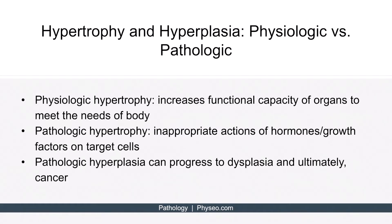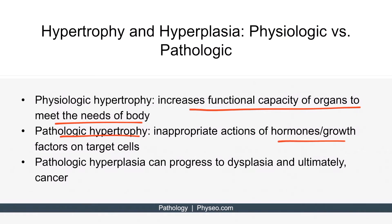Hypertrophy and hyperplasia can occur either in pathologic states or in physiologic conditions. Physiologic hypertrophy occurs to increase the functional capacity of organs to meet the needs of the body. One example is proliferation of the glandular epithelium of the female breast during pregnancy — the breasts grow in size to prepare for breastfeeding. Pathologic hypertrophy is caused by excessive or inappropriate actions of hormones or growth factors. Pathologic hyperplasia can progress to dysplasia and ultimately cancer. For example, hyperplasia of endometrial tissue can occur with increased estrogen stimulation, and this endometrial hyperplasia can then progress to dysplasia and further to endometrial cancer.